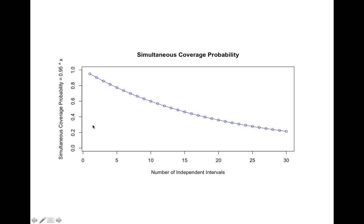I have two independent intervals. The probability that both those intervals are going to cover the true values has gone down a little bit. You can see, as I increase the number of different independent confidence intervals that I create, the probability that all of the confidence intervals cover the true value goes down.